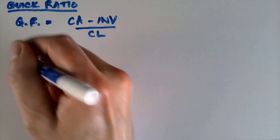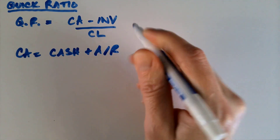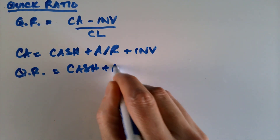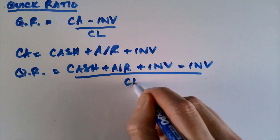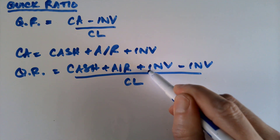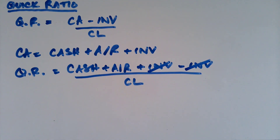Here's the problem though. Usually the current assets we are given are cash, accounts receivable, and inventory — and so we add those three together to get current assets. We could do the following substitution: put in cash plus accounts receivable plus inventory for current assets, then subtract out inventory before dividing by current liabilities. Something fun happens here — these two things just cancel out. So the quick ratio is actually just cash plus AR divided by current liabilities.